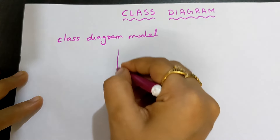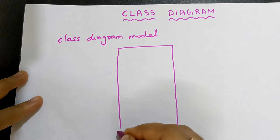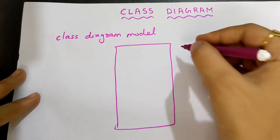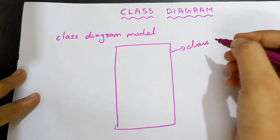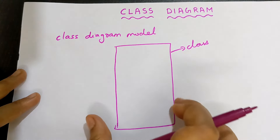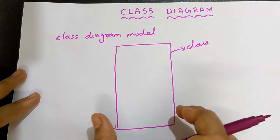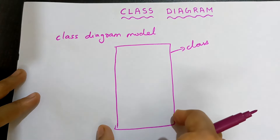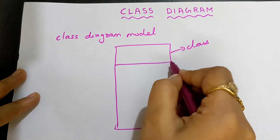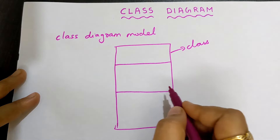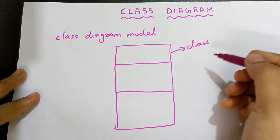You need to draw a box. This box indicates a class. This box I am going to divide into three parts: part number one, part number two, and part number three. So three compartments of a class.